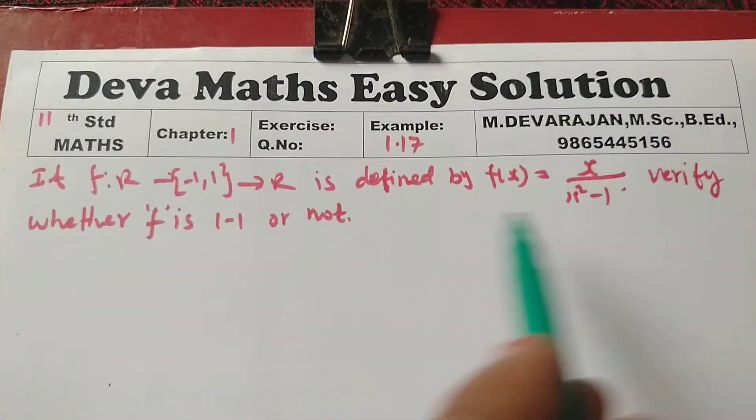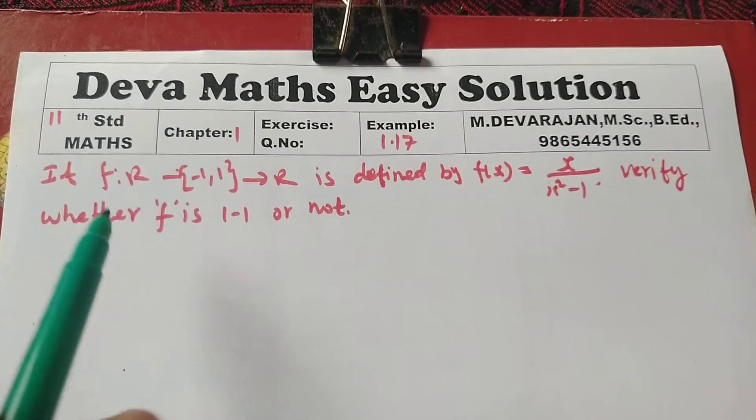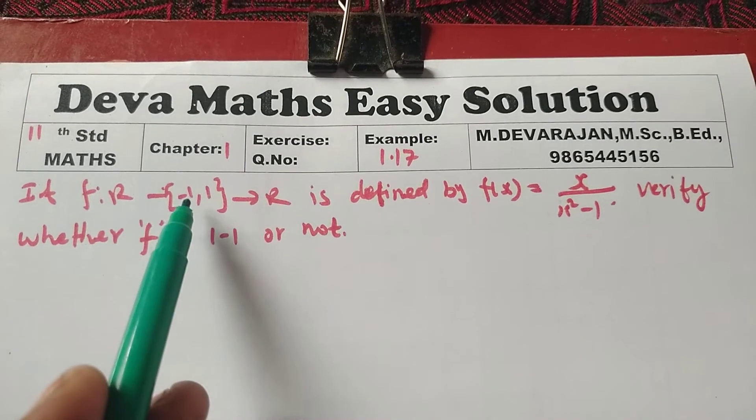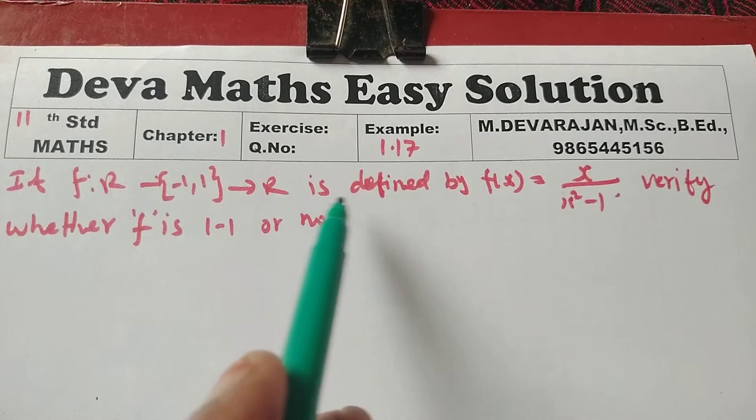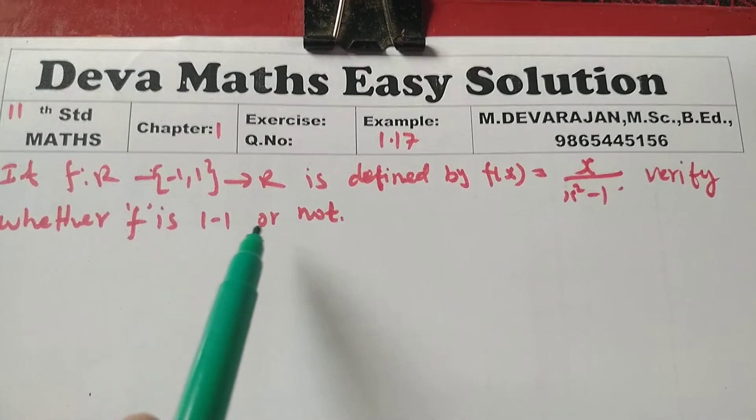Hi students, this is Deva from Deva Maths Easy Solution. Now we are going to see 11th Standard Maths Chapter 1, Example 1.17. Question: If f from R minus {-1, 1} to R is defined by f(x) = x/(x² - 1), verify whether f is 1-1 or not.